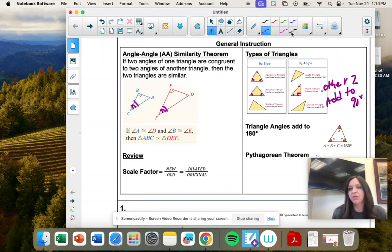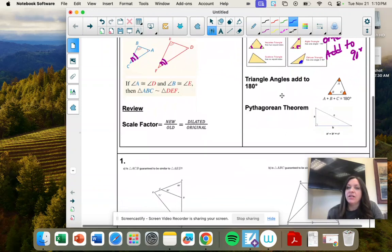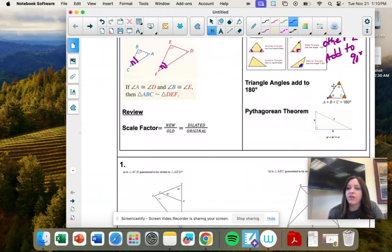And then obtuse, one angle is greater than 90. So the other two add to less than 90. And then triangles, all three angles add to 180.